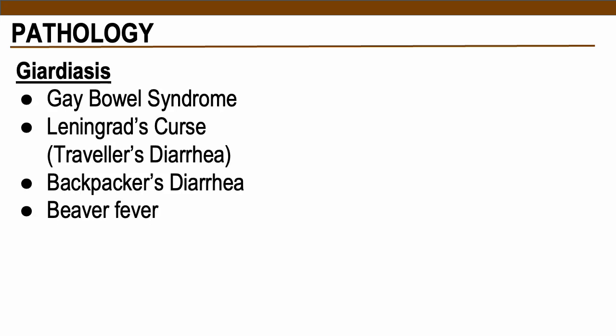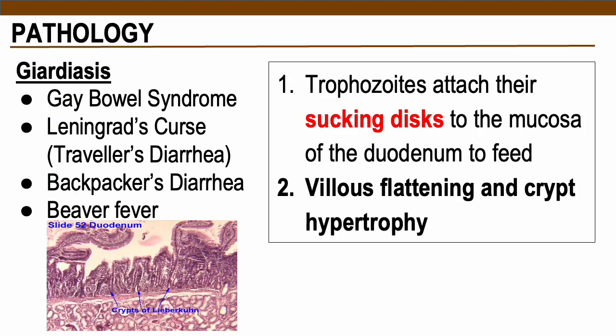For the pathology of Giardia lamblia, this is what we call giardiasis, and it is associated with multiple common names: Gay Bowel Syndrome, Leningrad's Curse or Traveler's Diarrhea, Backpacker's Diarrhea, and Beaver Fever. The disease is initiated when trophozoites feed by attaching their sucking disc to the mucosa of the duodenum. Some may also infect other sites such as the bile ducts and the gallbladder, causing villous flattening and crypt hypertrophy within the intestinal mucosa.